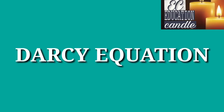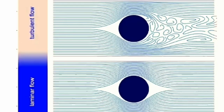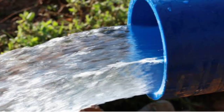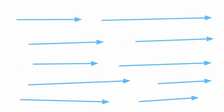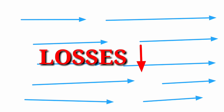Welcome to Education Candle. In this video we will discuss Darcy's equation. First we will talk about flow through pipes. In the introduction we have seen types of flow like laminar flow and turbulent flow. If we see that there is an ideal flow and it flows on a frictionless surface, there will not be any loss. But when a fluid flows in a pipe, there will be friction losses.